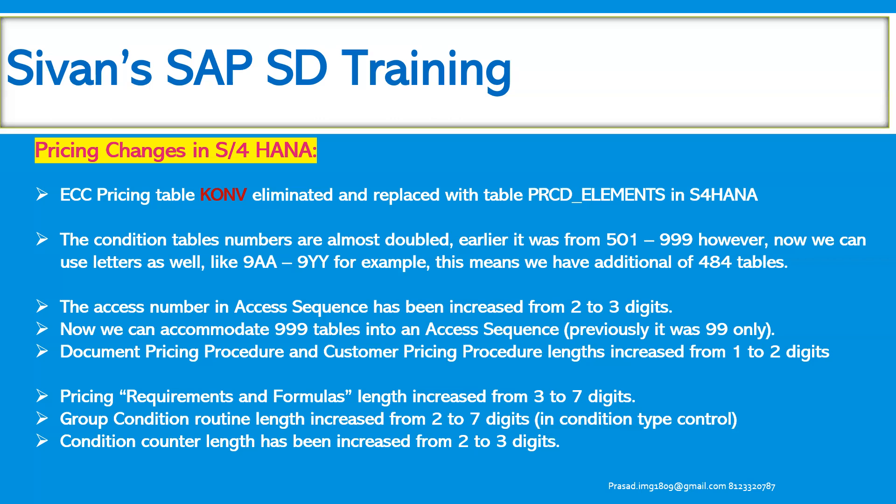The access number in access sequence has been increased from 2 to 3 digits. Now we can accommodate 999 tables into an access sequence. Earlier, only 99 tables could be accommodated, and you could set the exclusive indicator for those 99. Now with 999 tables, as per the client's requirement, we can set the exclusive indicator in the access sequence.